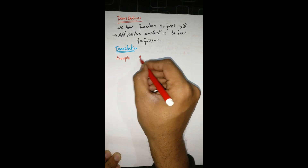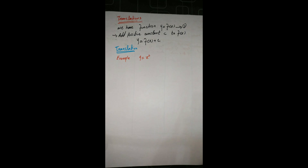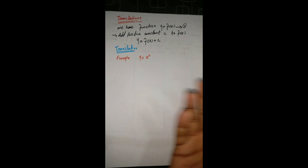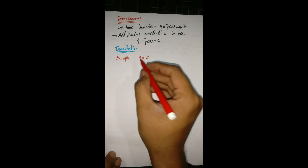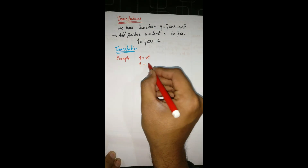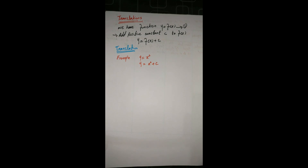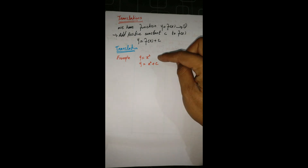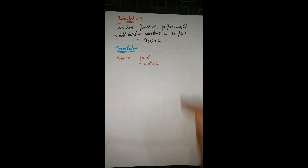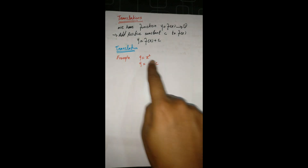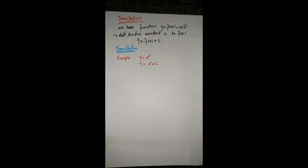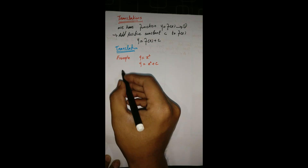For example, if y = x², whenever we add a positive constant c, it becomes y = x² + c, where c could be 1, 2, 3, or any value. To check what effect this has, we draw the graph of y = x². The graph of y = x² is an upward parabola.